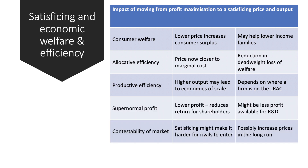Two other points: supernormal profits might be considered. Satisficing involves less profit per unit, so there will be some stakeholders who lose out — perhaps the dividend for shareholders is reduced, or the share price takes a hit. You could link that to there being less funding available for the business to invest in research and development, so perhaps satisficing could lead to less dynamic efficiency.